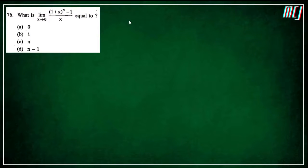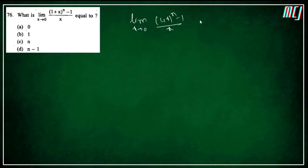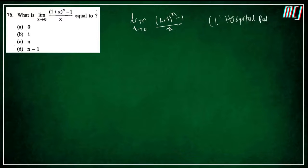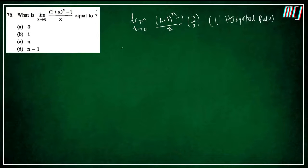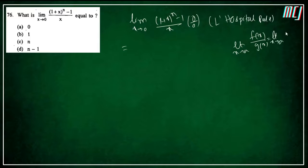First question: हमें limit निकालनी है — limit x tends to 0, (1+x)^n minus 1, divided by x. हम shortcut में solve करने वाले हैं। First of all हम L'Hôpital rule apply करेंगे। देखेंगे कि 0/0 form में है या infinity/infinity form में है। x=0 put करो: numerator 1 minus 1 = 0, denominator भी 0 — तो 0/0 form है।